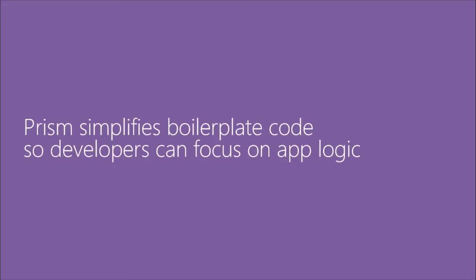Prism simplifies the boilerplate code — the stuff you do over and over again. How do I save state? How do I restore my navigation state? How do I deal with the application launch? All of these things get nicely rolled in together — that's one of the biggest values. We still get the things we're accustomed to in MVVM frameworks, around models, view models, attaching them and navigating. We get all of that, plus extra stuff that makes it easier to build a store app.